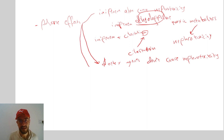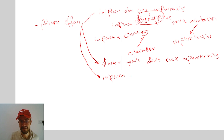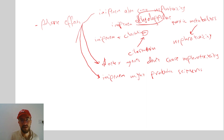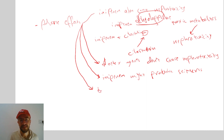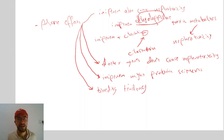Another side effect of imipenem is that it might provoke seizures in susceptible patients. Another side effect of the carbapenems is that they might cause hematological side effects like bleeding tendency. With that, we reach the end of this video. Thank you for watching, and see you in the next video.